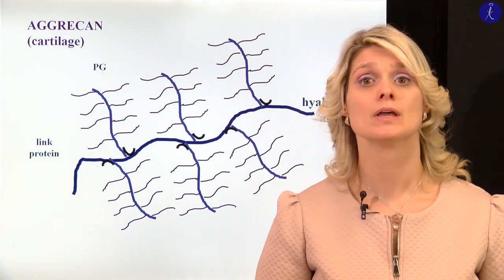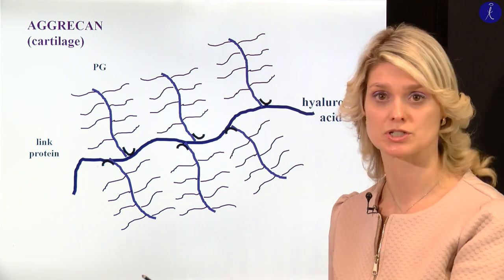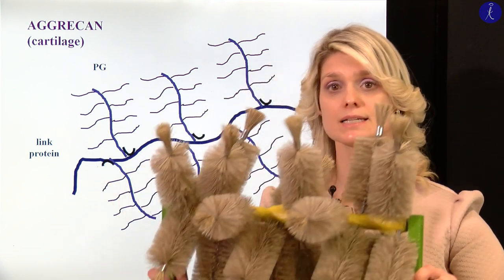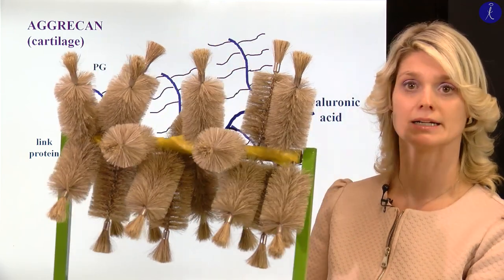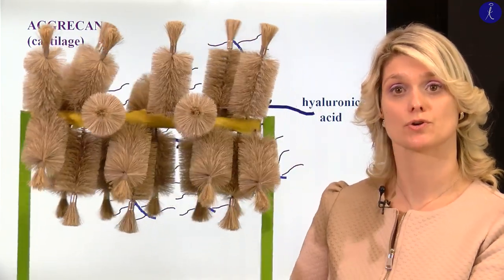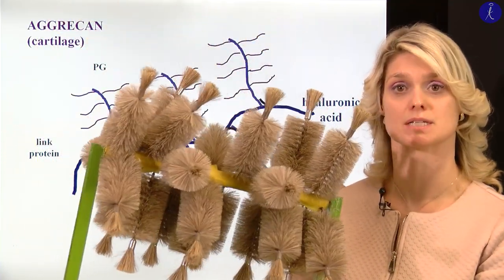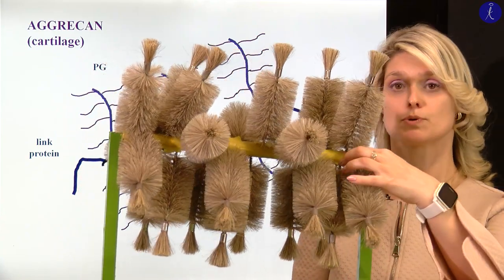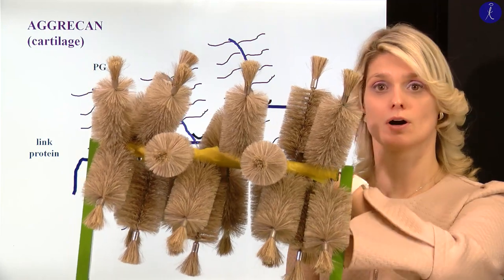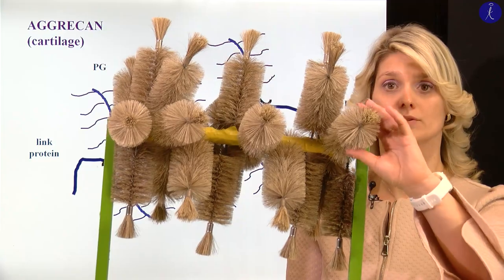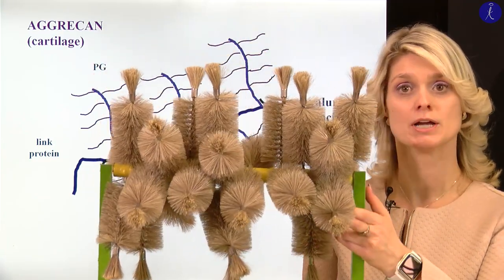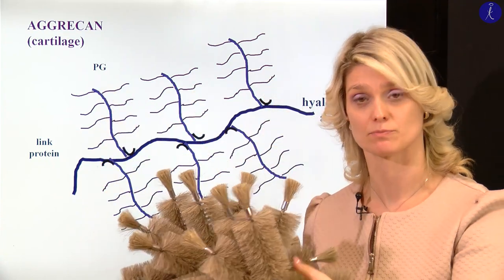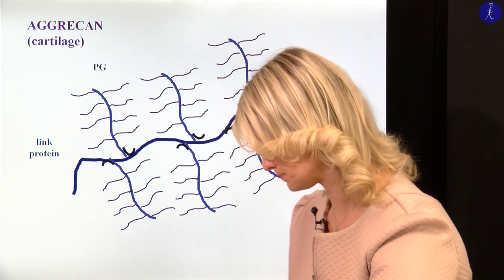For that picture, I would like to show you a model which is here next to me. This is the model we prepared to demonstrate for the students the structure of the amorphous ground substance. These units you can see here are the proteoglycan molecules, and these proteoglycan molecules will attach to a hyaluronic acid. Here you can see how they form this three-dimensional structure. Into this structure, the fibers and cells will be attached with special adhesive molecules.